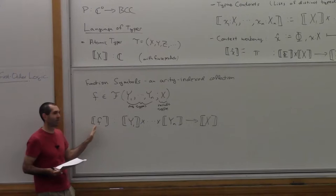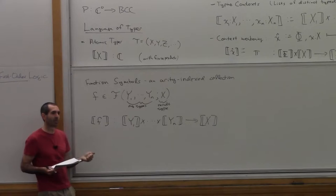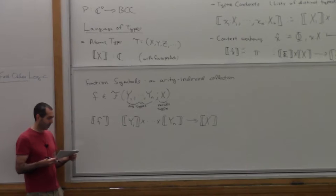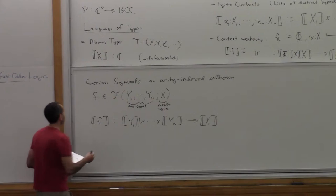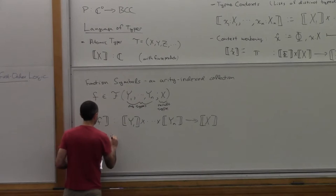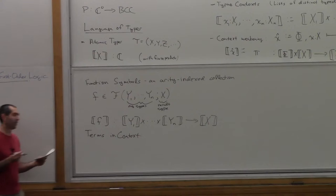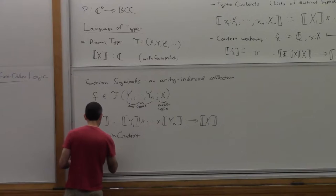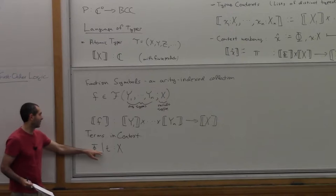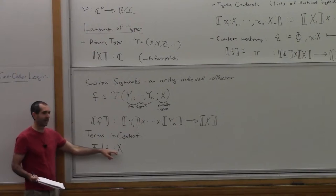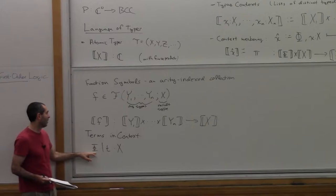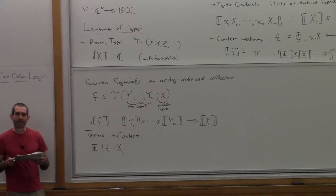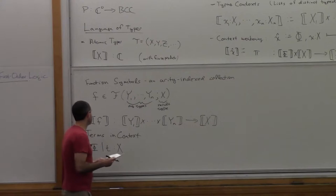So now we've interpreted types, typing contexts, and weakening. Now to finish the term language interpretation, we have to say what the terms are. We build those inductively, starting with function symbols. A function symbol F is in the collection of function symbols with arity Y1 up to Yn and result type X. This means: if you give the function symbol F arguments of types Y1 up to Yn, it gives you back a term of type X.